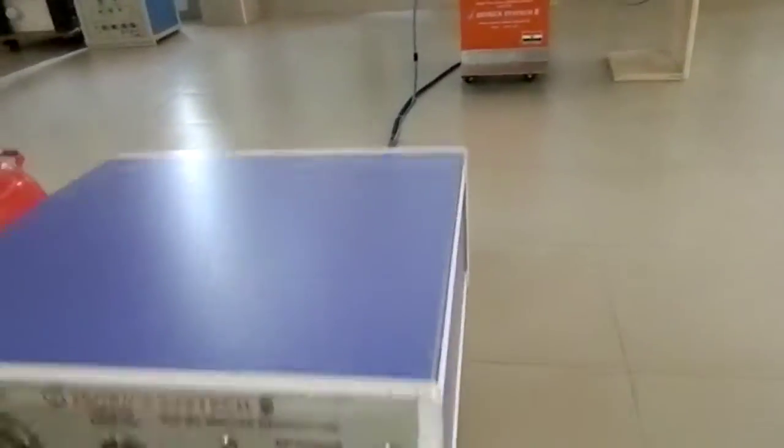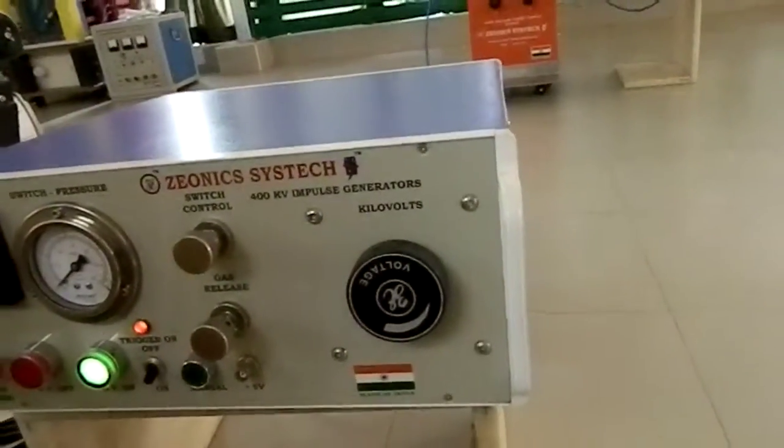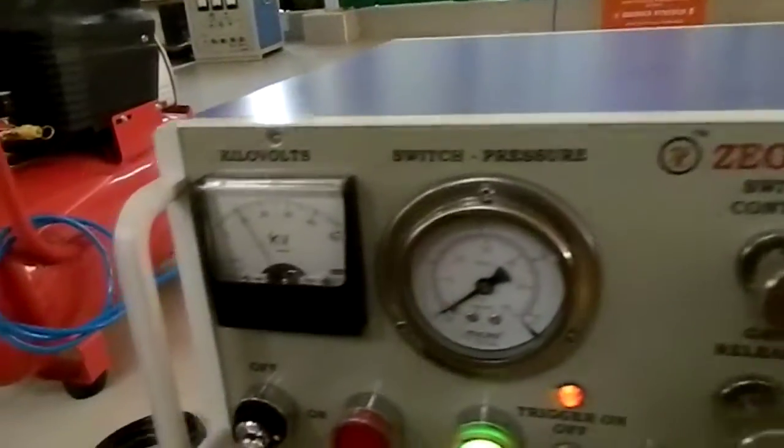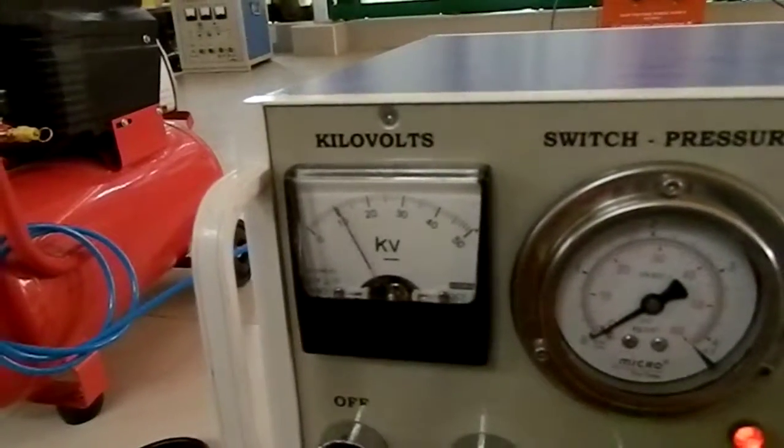You can slowly reduce the voltage by turning the knob anti-clockwise. You will see that the kV will not build up.